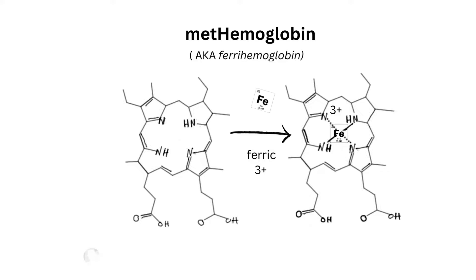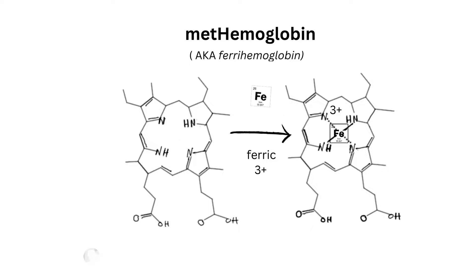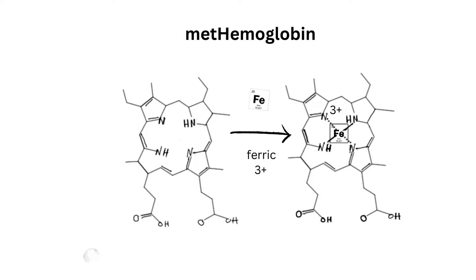Methemoglobin, otherwise known as ferrihemoglobin, is the result of a reversible oxidation of ferrous ions to the ferric state (3-plus), and it cannot carry oxygen. Ferric iron does not bind oxygen, and this is a rare incidence of oxidation caused by drugs — for example, primaquine and other anti-malaria drugs, as well as nitrites.